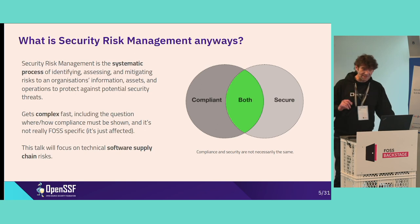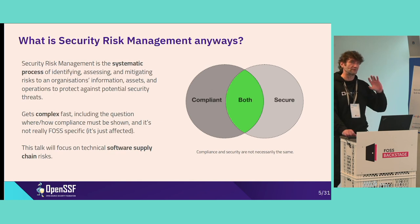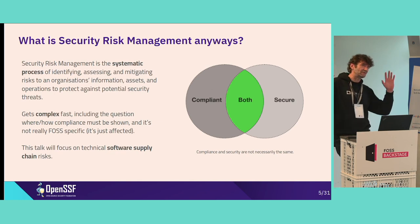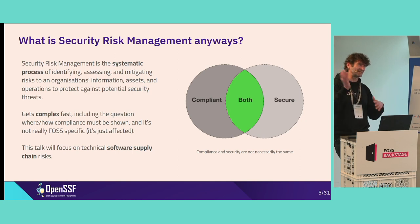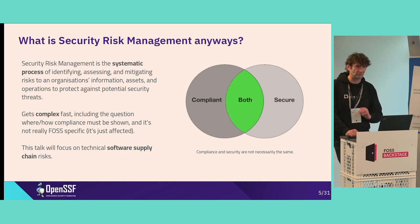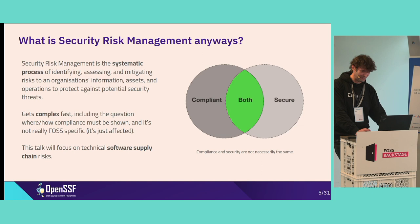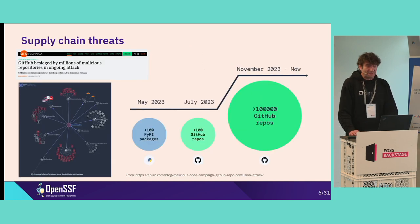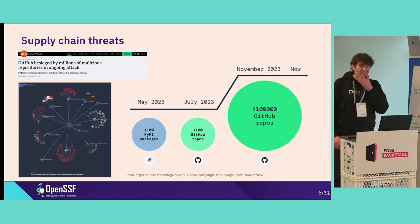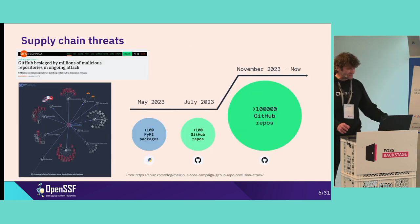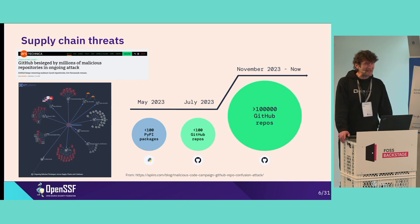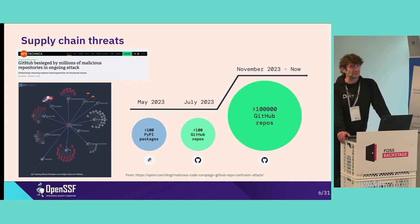So I changed that talk from super high-level risk management — which also contains incident response and other things — to just focus on supply chain questions. That is also because the organization is focused on that subject. So, what are threats to the supply chain in the open source space?